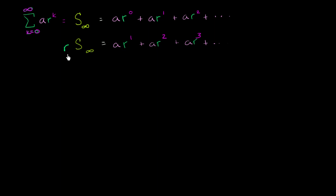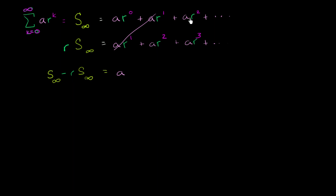Now, what happens if we subtract this sum from the top sum? On the left-hand side, that's S sub infinity minus r times S sub infinity, which equals: the a times r to the 0th power term, which is just a. Every other term cancels — a times r to the 1st minus a times r to the 1st, a times r to the 2nd minus a times r to the 2nd — and this happens all the way to infinity. So the only term left is just a.